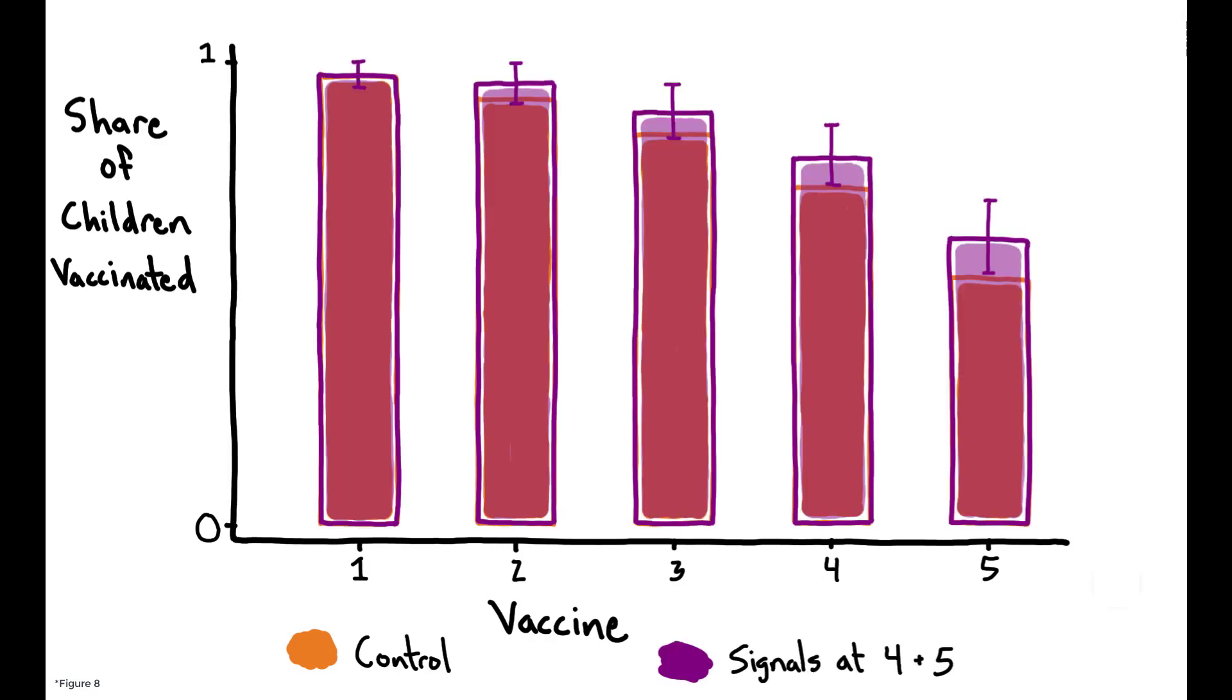Looking at the two signaling groups, however, shows that providing a durable and credible signal of vaccination status led to a significant increase in the share of children receiving vaccines four and five. The effects indicate that the signaling treatment reduced drop-off by 56 and 44 percent respectively.